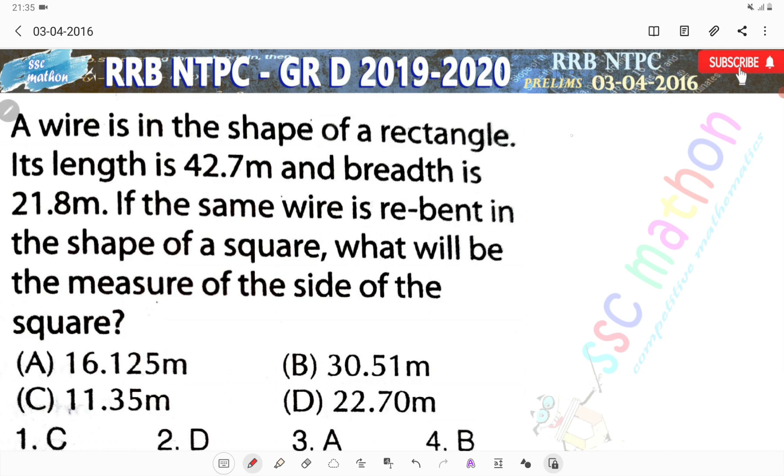What is the length of the rectangle? This length is 42.7m and the breadth is 21.8m. If the same wire, L plus B is 64.5m. Now, the perimeter is 2 into L plus B.